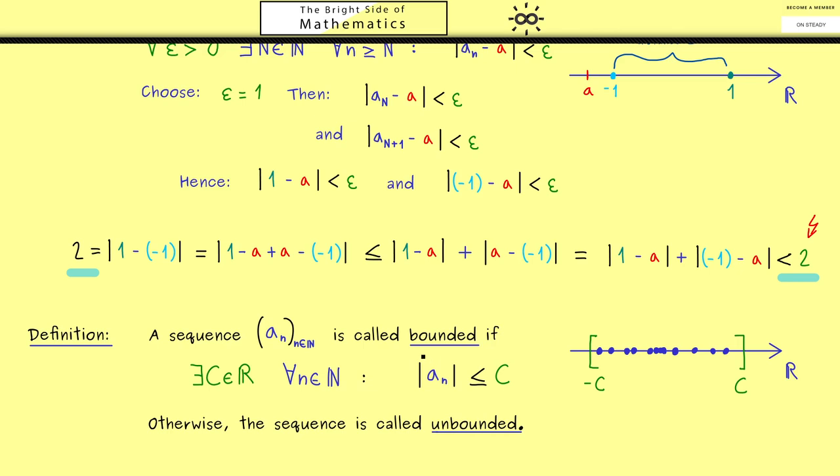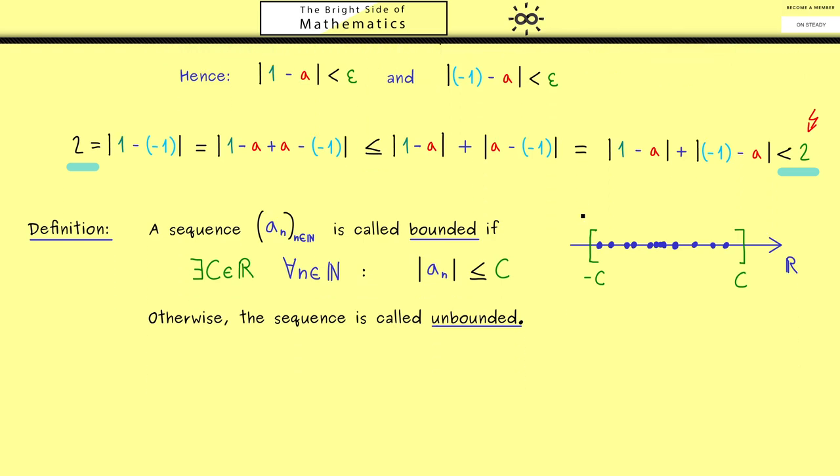An example of a bounded sequence you have already seen in the example from the beginning. There we can just set the c to be 1 and then you see the picture fits in. However we have even seen more examples because we have the following important fact: If we have a convergent sequence we can conclude it's also bounded. However not the other way around as we have seen in the first example today. Another important fact you should remember here is the counterposition, which means if you have an unbounded sequence you already know it can't be convergent. So let's prove this important fact here which is indeed not so hard.